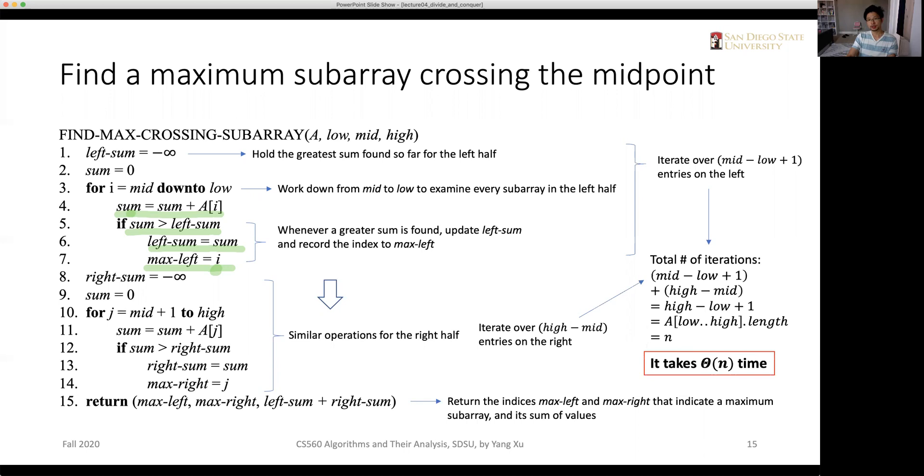So this information would help us to infer that the whole procedure, find max crossing sub-array, will take big theta of n time. Because it is just in linear running time. It is no difference than a for loop that iterates from the very beginning to the very end. It just splits the for loop into two halves. The left for loop, the right for loop. There's no big difference.